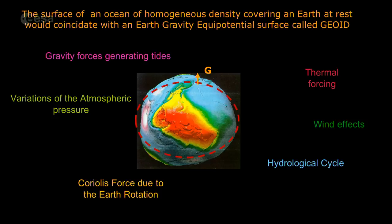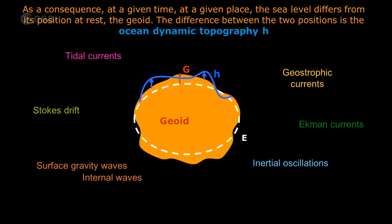We'll have thermal forcing, wind effects, the hydrological cycle, the Coriolis force due to Earth's rotation, atmospheric pressure variation, and gravity forces from the sun and moon generating tides. Many different ocean surface currents will appear: tidal currents, surface gravity waves, internal waves — on which Bertrand will give more details on Friday — the Stokes drift, geostrophic currents, Ekman currents, and inertial oscillations. All of these superimpose at different spatial and temporal scales.